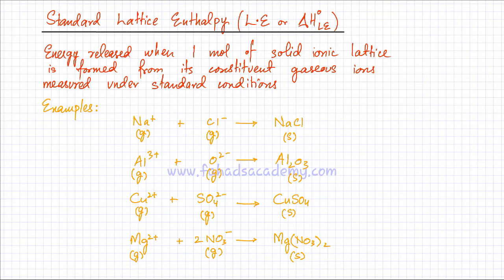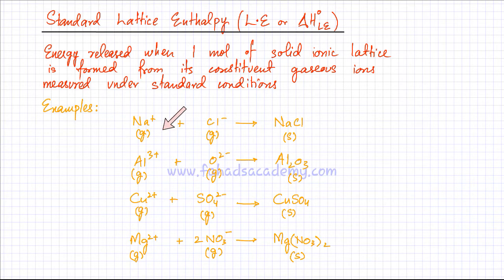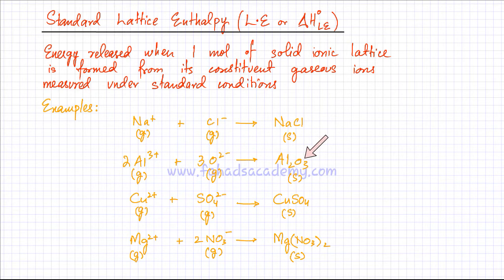Some examples: one mole of a solid ionic lattice — remember it should be an ionic lattice, not a covalent compound or simple molecular substance — is formed from its constituent gaseous ions. So NaCl solid is formed from sodium ions and chloride ions in the gaseous state. Another example: one mole of Al₂O₃, also a solid ionic lattice, is formed from its gaseous ions Al³⁺ and O²⁻. This should be a balanced equation, with two aluminum ions and three oxygen ions, and these ions should be in the gaseous state.